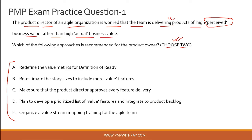For example, consider an iPhone. If someone owns a clone of an iPhone, they may perceive they have an iPhone — that's perceived value. But the actual experience of using that clone may be very different from a genuine Apple iPhone. The question asks which approaches are recommended for the product owner — select two options — to ensure actual value gets delivered to the customer rather than perceived value.